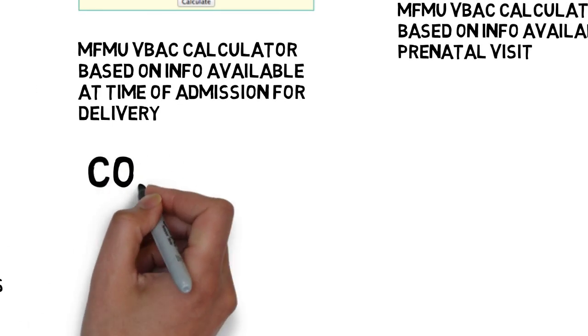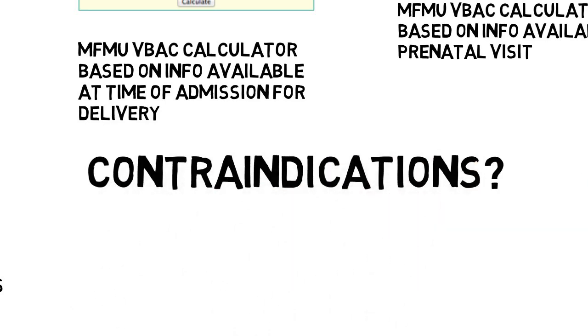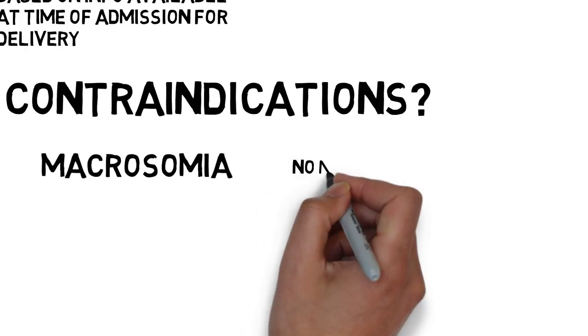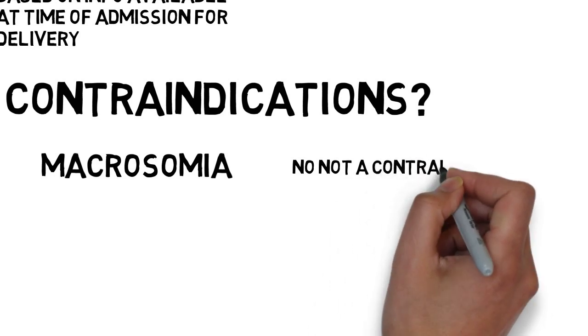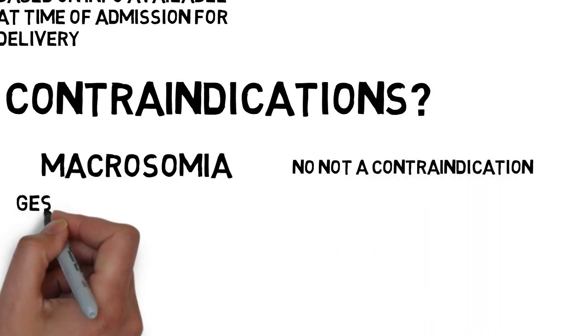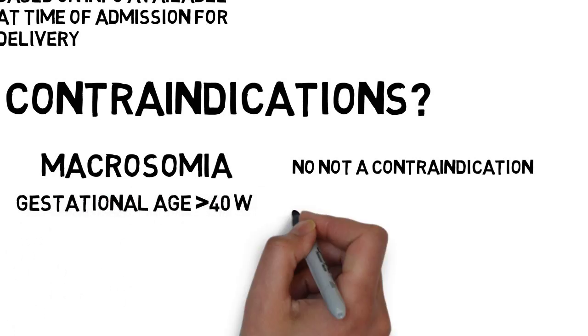All right. Macrosomia. Not surprisingly, having the first section for dystocia, if the next baby is bigger, chances for success are lower. But the conclusion is that suspected macrosomia does not preclude TOLAC. Same thing for gestational age greater than 40 weeks. It might decrease the chances of success, but it doesn't preclude TOLAC.